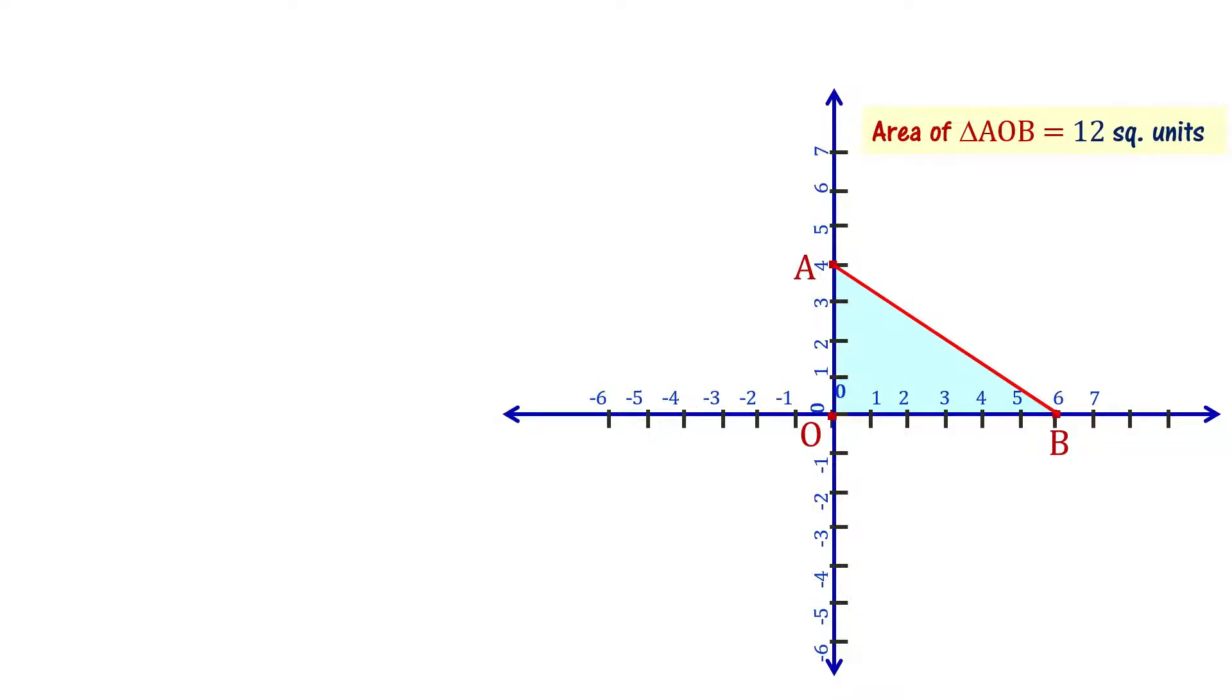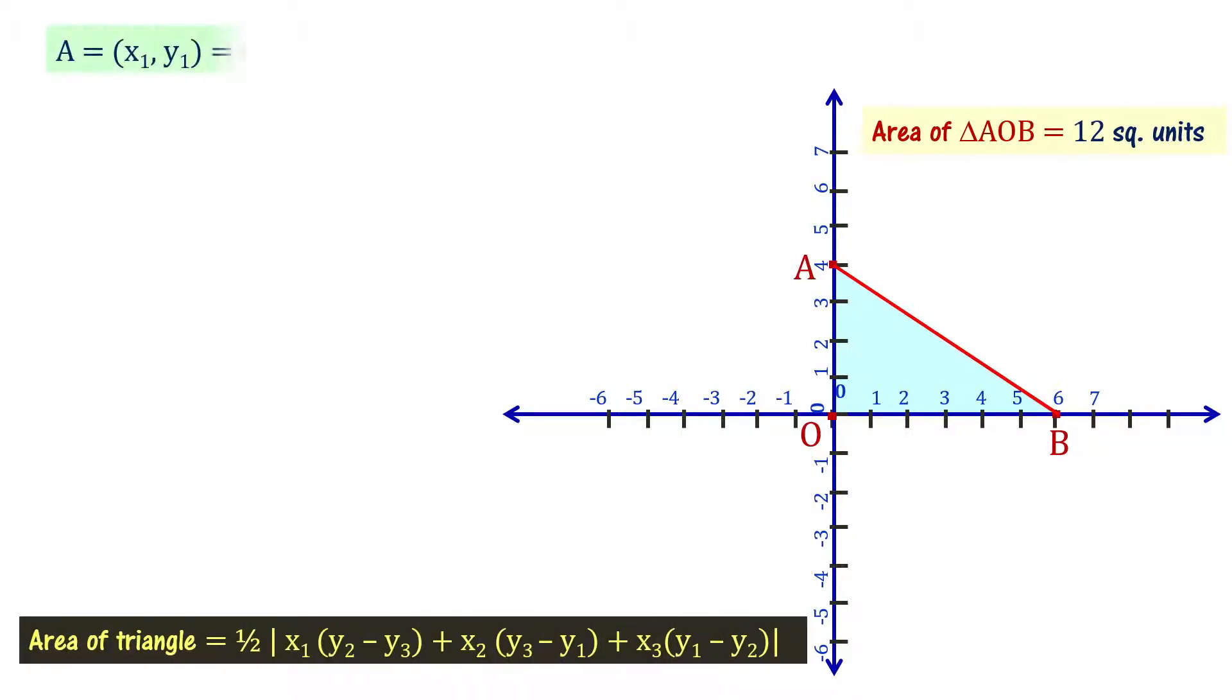What coordinates? A coordinates (x₁, y₁) is (0,4). B coordinates (x₂, y₂) is (6,0). O coordinates (0,0). Now, we have x₁, y₁, x₂, y₂, x₃, y₃ values known.